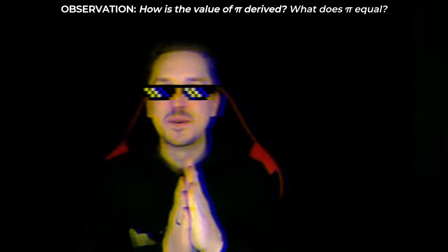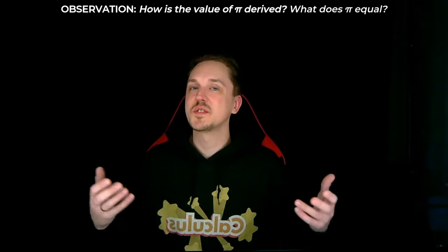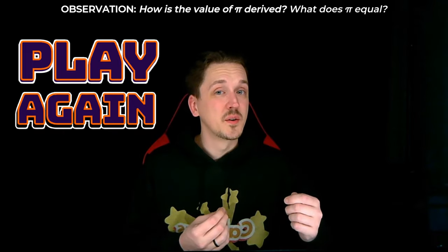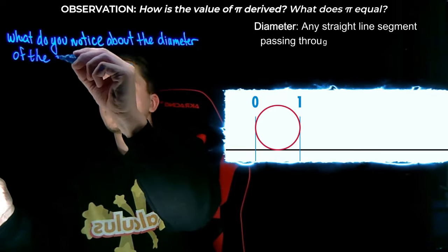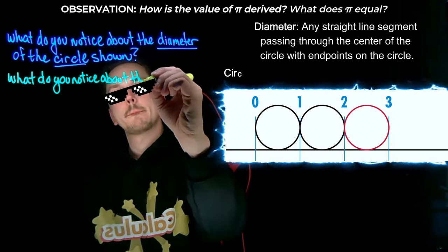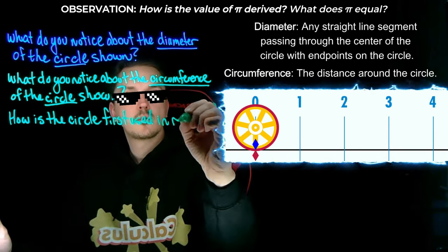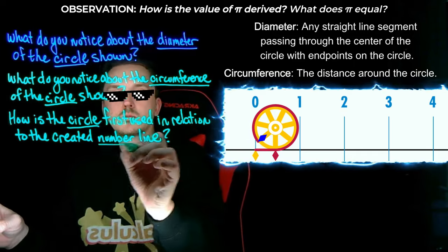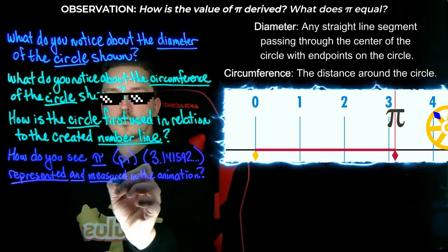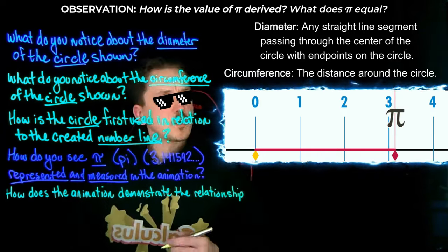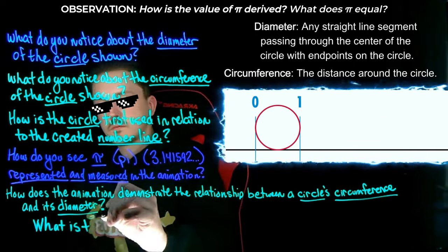Without further ado, let's take a look at this animated GIF. As we watch, let's consider the following questions together. Feel free to pause and rewind if you need to — just be sure to take your time and explore. What do you notice about the diameter of the circle shown? What do you notice about the circumference of the circle shown? How is the circle first used in relation to the created number line? How do you see pi represented and measured in the animation? How does the animation demonstrate the relationship between a circle's circumference and its diameter? What is that relationship?